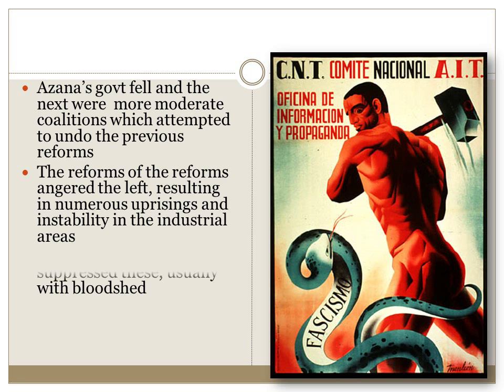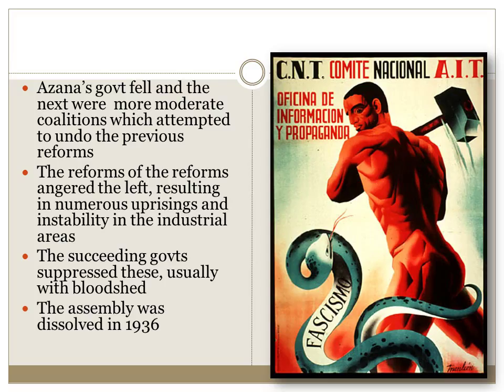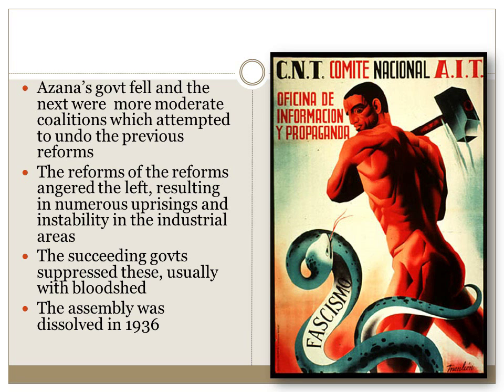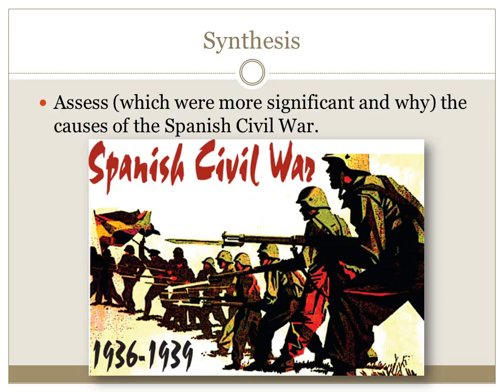The assembly was dissolved in 1936. Even though the Second Spanish Republic is said to have lasted until 1939, by 1936 the actual democratic functioning was over. In July 1936 there was an attempted coup by the military, and Spain fell into civil war.